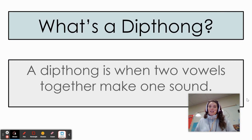What's a diphthong? A diphthong is when two vowels come together to make one sound, like ow or o-y.